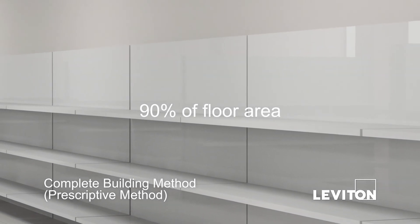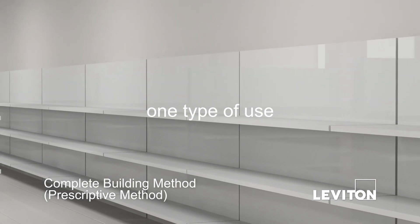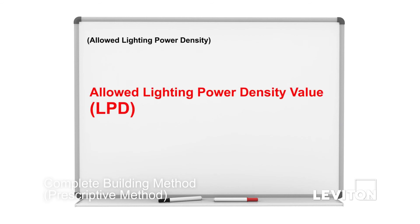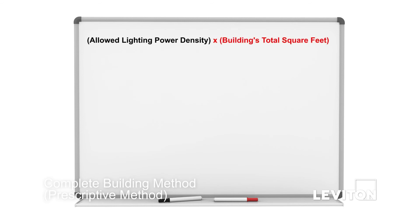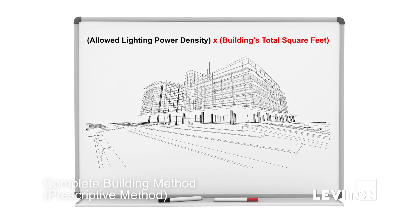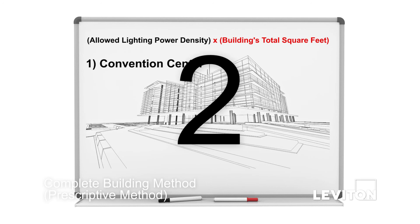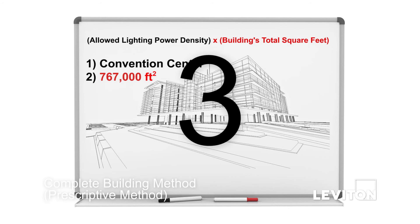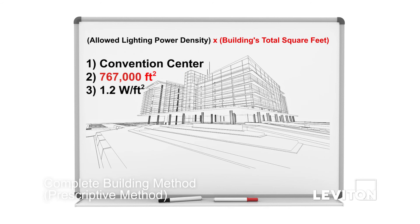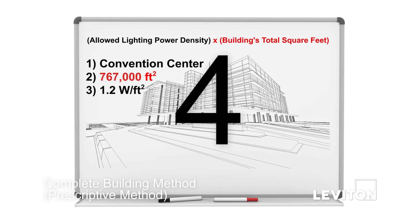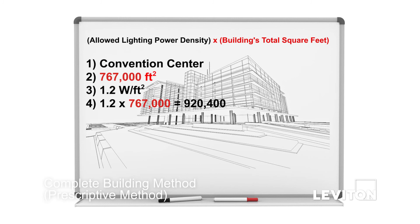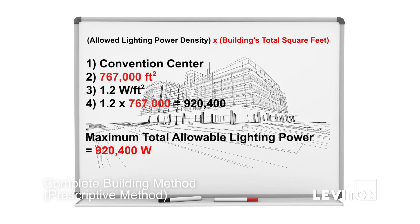Ninety percent of the floor area for the entire building must consist of only one type of use. The complete building method uses an allowed lighting power density value based on building type, which is multiplied by the building's total number of square feet. To illustrate the process: first, identify the building type. Second, identify the total number of square feet. Third, look up the allowed lighting power density value in wattage per square foot for each building type. The allowed lighting power density value can be found in the Non-Residential Compliance Manual. Fourth, multiply the allowed lighting power density value by the building's total number of square feet to determine the maximum total allowable lighting power for that building.